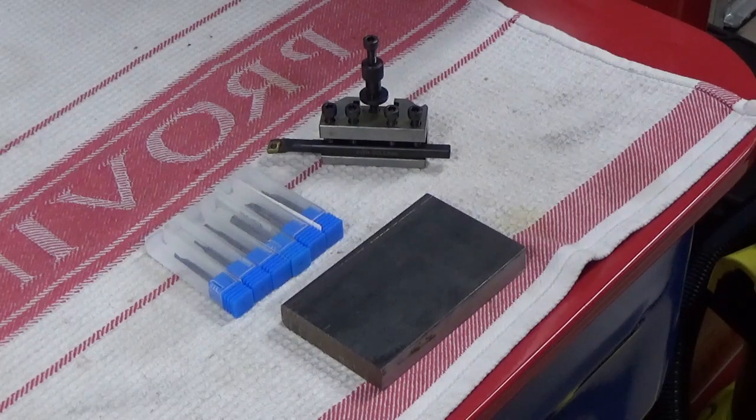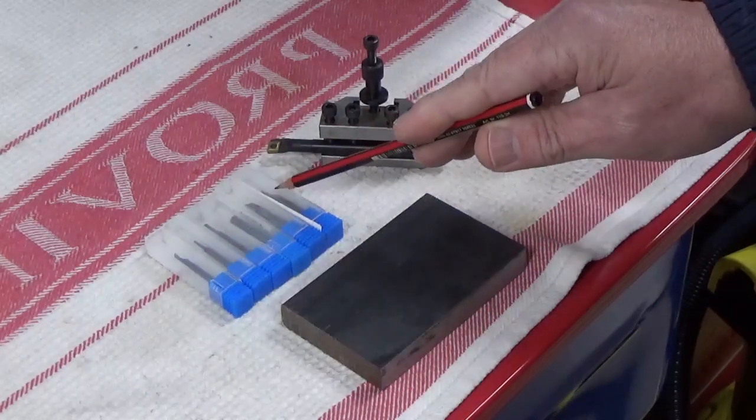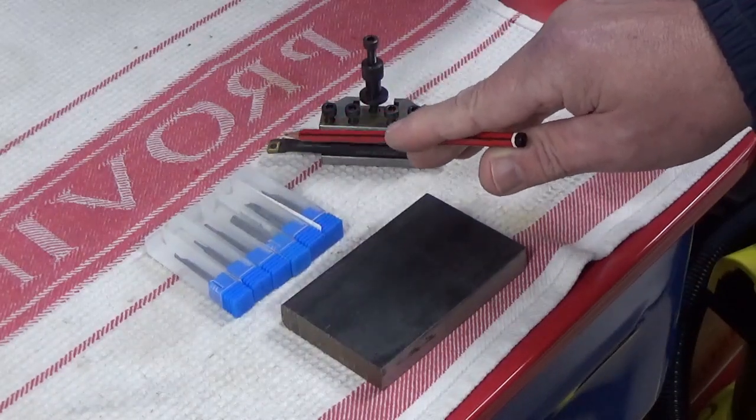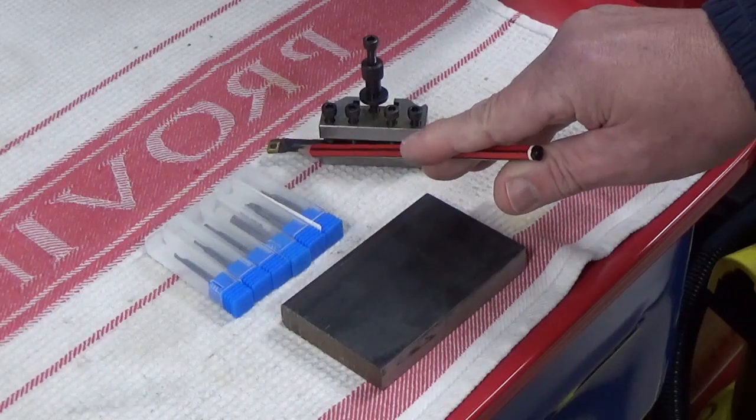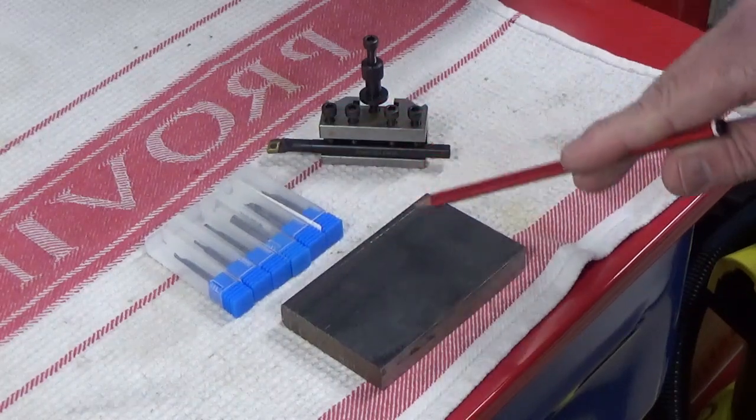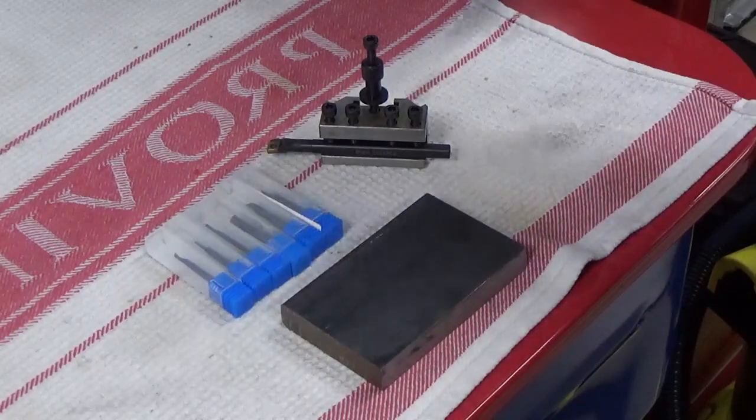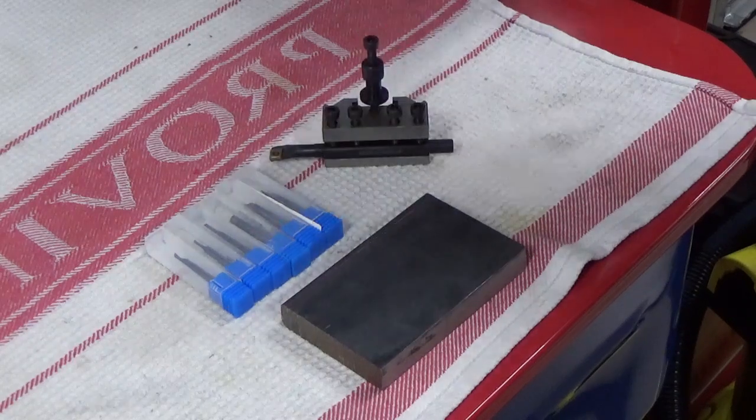So what we're going to be doing here is making up some holders to suit these boring bars. Now these are quite small ones, and as you can see here we've got the standard type boring bar. This is the smallest one I've got in this style, and we've got to make up some holders from this block of steel here to fit into these holders for the lathe.